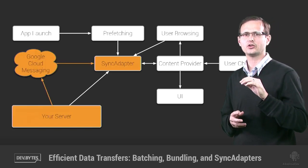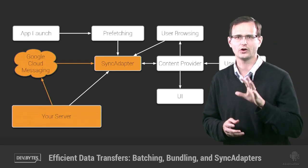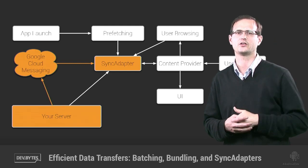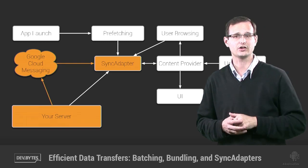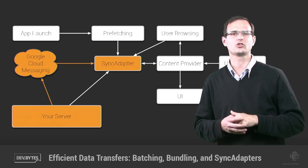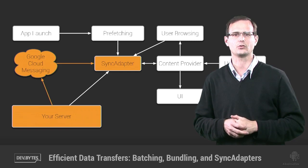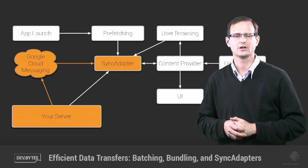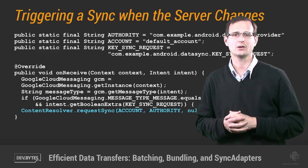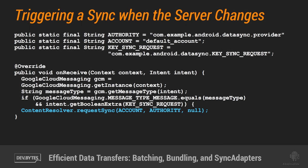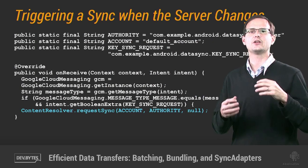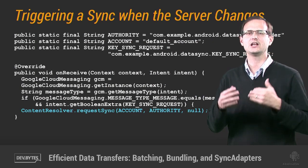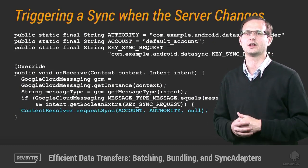The best approach is to rely on server pings notifying your app that there is new data to download. Using Google Cloud Messaging, which I'll explore in more detail in another DevByte, you can notify each installed instance of your app that it needs to sync with the server. Simply listen for an incoming GCM message notifying you of new data becoming available, and call requestSync specifying the appropriate account and authority. This eliminates the need for any client-side polling while maintaining constantly up-to-date client data.